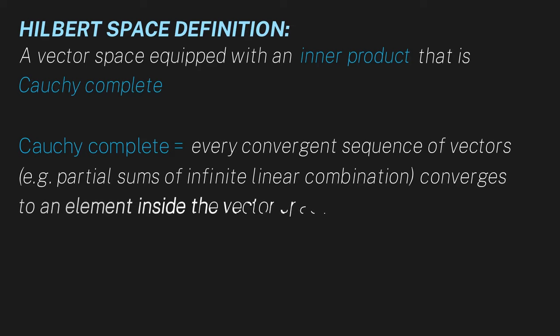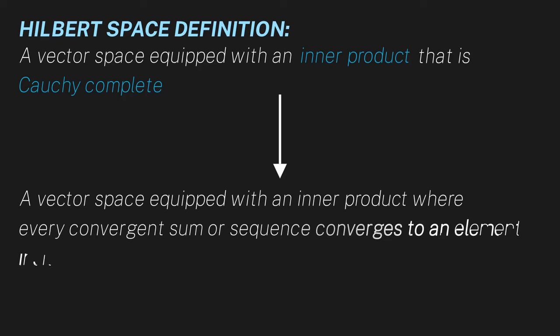So put together, a Hilbert space is a vector space equipped with an inner product, where every convergent sum or sequence converges to an element inside our vector space. This is almost word for word what our extra rule was.